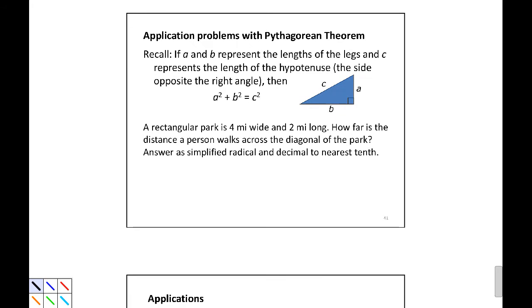Our Pythagorean theorem says if we have a triangle, a squared plus b squared equals c squared, where c is the hypotenuse, the longest side that is opposite the right angle.